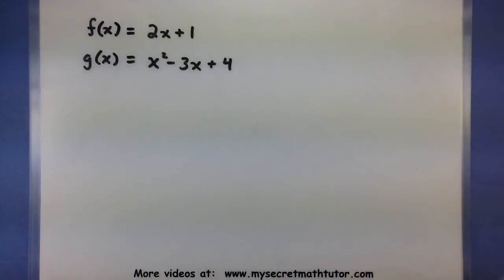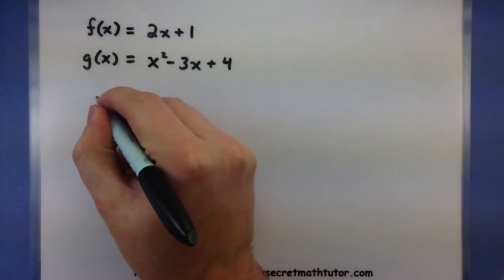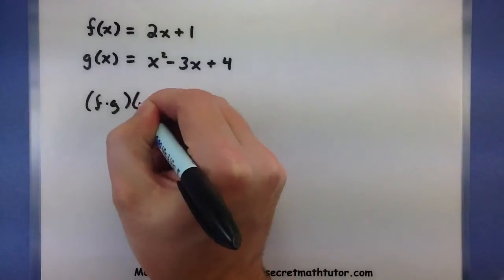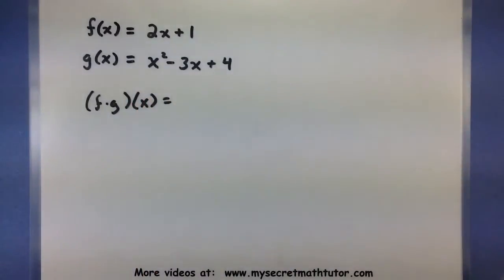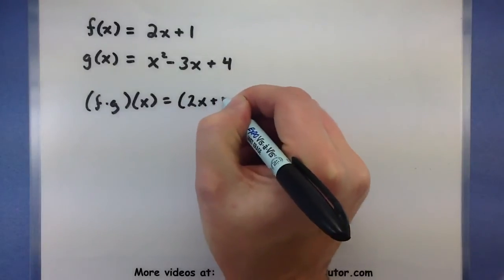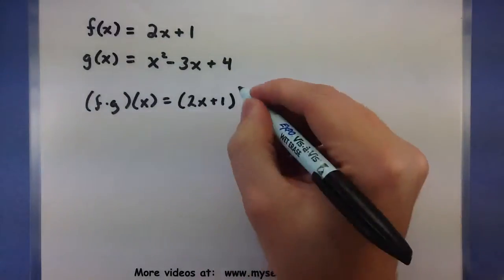So my two functions here are 2x plus 1 and x squared minus 3x plus 4. So if I want to look at f multiplied by g, then this means I want my f function multiplied by my g function.